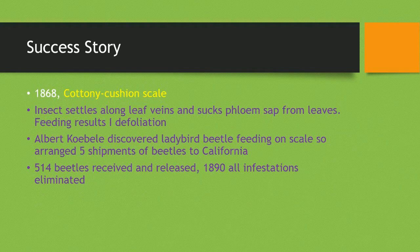By 1890, all the infestations had been eliminated. This is clearly an example where ladybird beetles were brought in and released, and they took out the insects that sucked the flowing sap from the leaves. These beetles also weren't able to target other species.